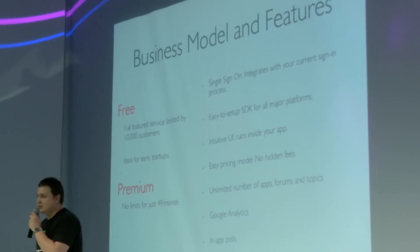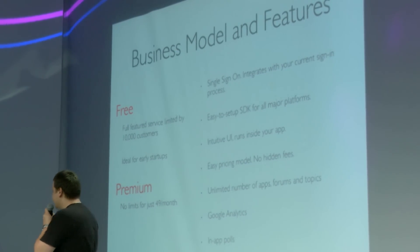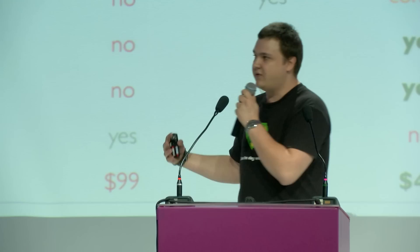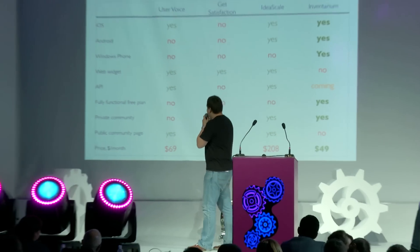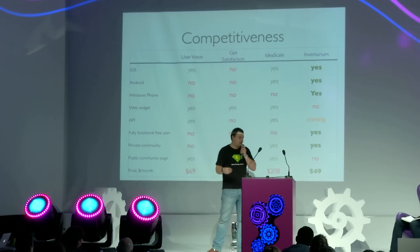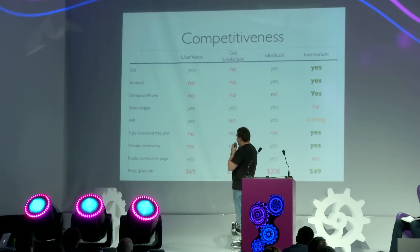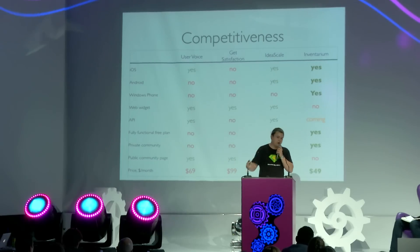Inventarium is based on a freemium business model. Before you get 10,000 customers, you can use it for free, and after that it costs only $49 a month. We have several competitors — big customer feedback systems for websites, like UserVoice and Get Satisfaction — and they are targeted at the enterprise segment. They don't have a solution for all mobile platforms.